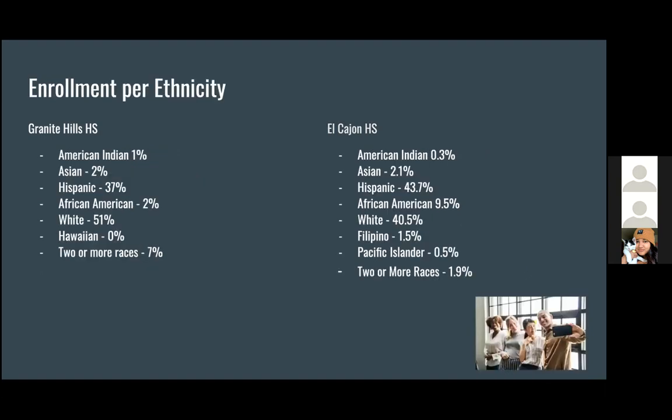Here we have the enrollment per ethnicity. At Granite Hill, the majority of students are white at 51%, and the second largest group is Hispanic at 37%. At El Cajon High School, the majority is also white at 40.5%, and Hispanic at 43.7%.